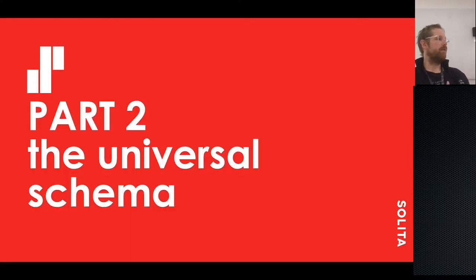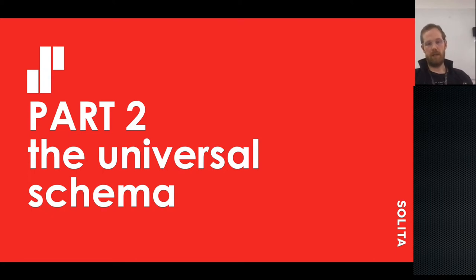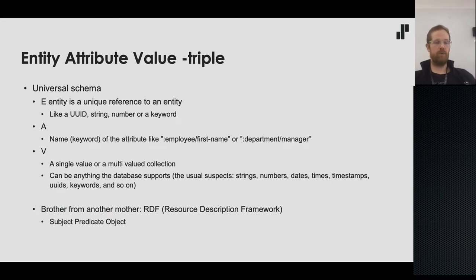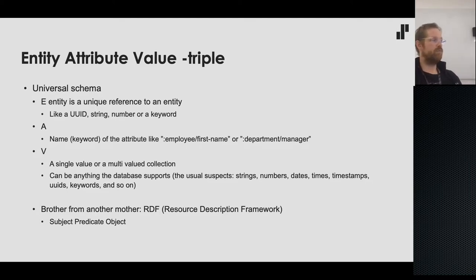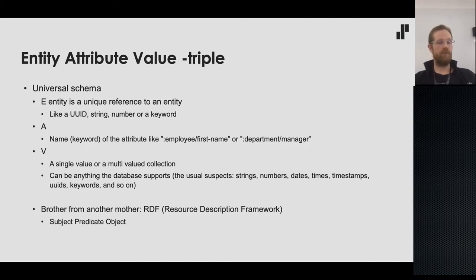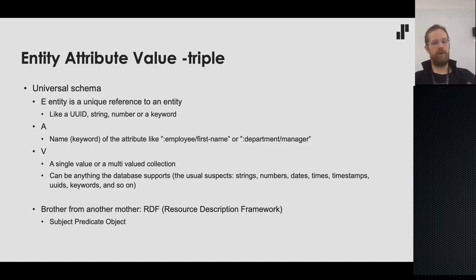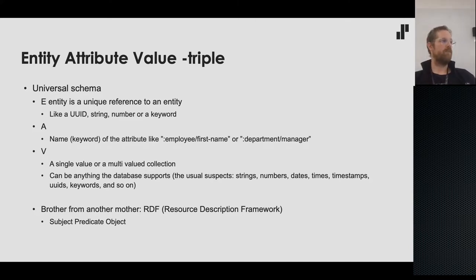The universal schema is basically EAV — Entity Attribute Value triple. The E, meaning the entity, is just a unique reference to some entity in your data model — it's an ID, so it could be a UUID, string, number, or keyword depending on how you want to reference your entities. The A is the name, usually a keyword, of the attribute — same as a column name in a relational database.